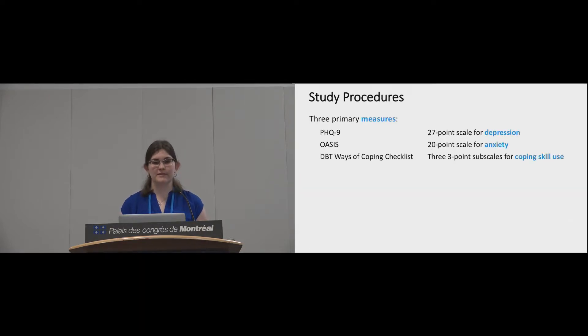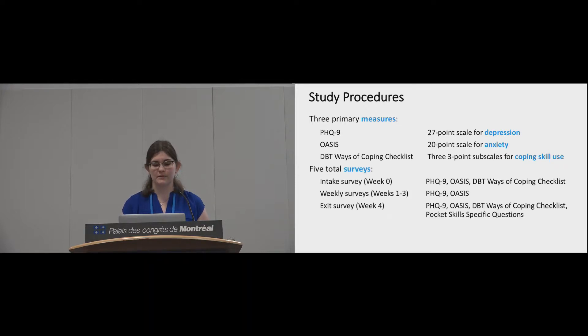Participants completed surveys consisting of validated scales so we could assess their progress, including the PHQ-9, which measures depression, the OASIS, which measures anxiety, and the DBT ways of coping checklist, which measures positive and negative coping skills use. They took the PHQ-9 and the OASIS weekly and the DBT ways of coping checklist at the intake and exit surveys. The exit survey also consisted of PocketSkills-specific questions, which were predominantly open-ended questions asking about what people liked and disliked about PocketSkills and whether and how it helped them. We had no app usage requirements, but we did send daily text messages to remind participants to engage with the app.